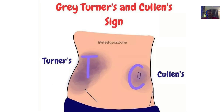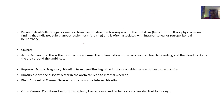The person has a discoloration around the umbilical area — that is, discoloration around the belly button area. The peri-umbilical sign is a medical term used to describe bruising around the umbilicus, which is the belly button. It is a physical examination finding that indicates subcutaneous ecchymosis — bruising in that region.